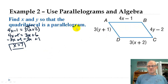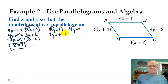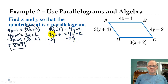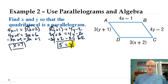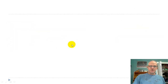The other equation says 3 times y plus 1 has to equal 4y minus 2. Distribute the 3: 3y plus 3 equals 4y minus 2. Subtract 3y and add 2: 4y minus 3y is just y, and 3 plus 2 is 5. So y equals 5. So x is 7 and y is 5 — the same process we did last section.